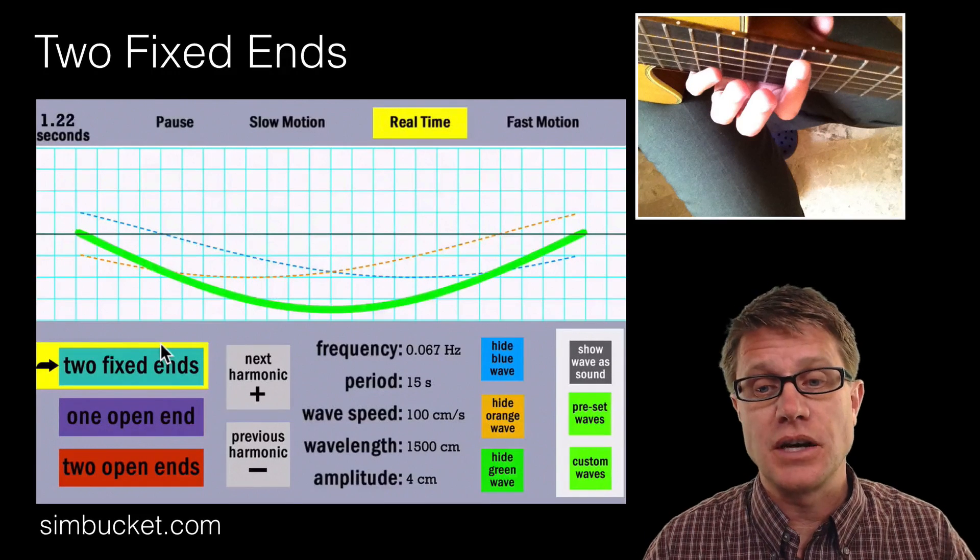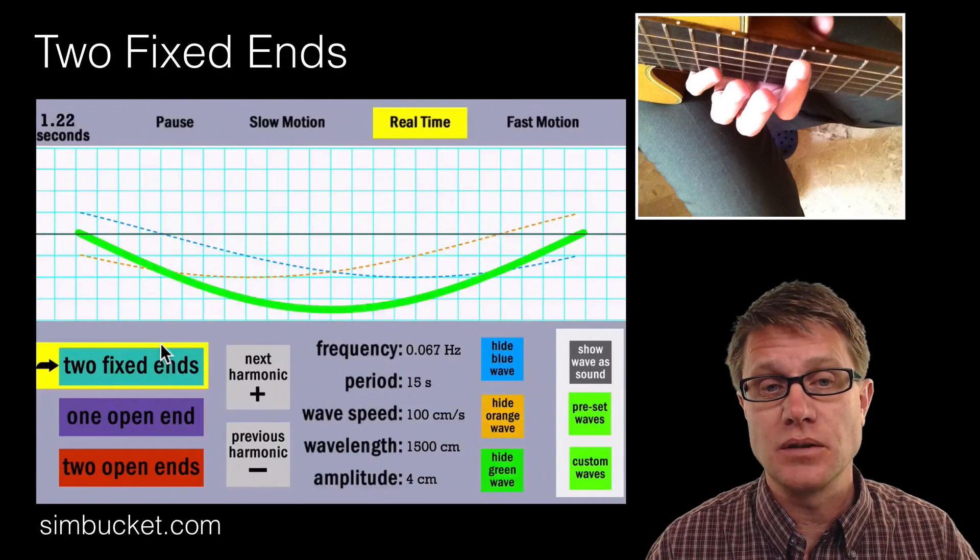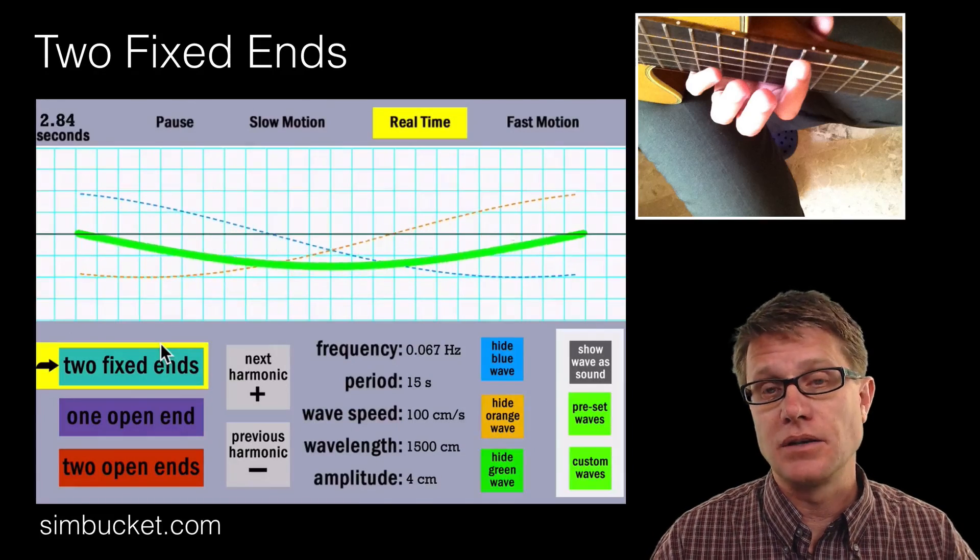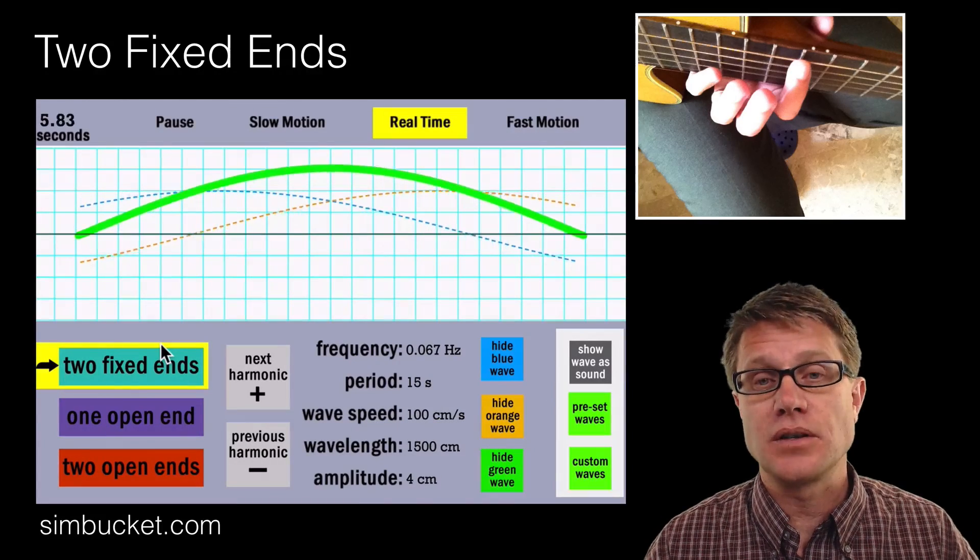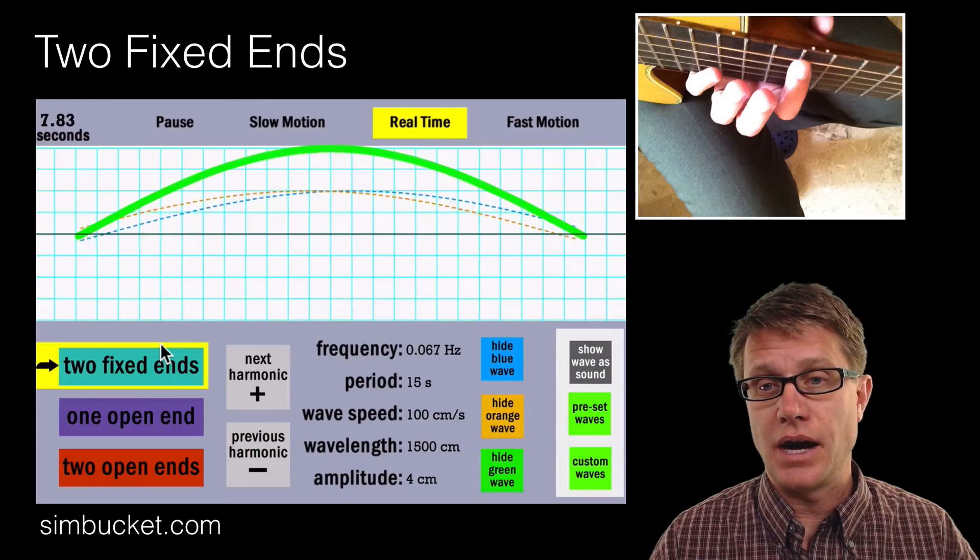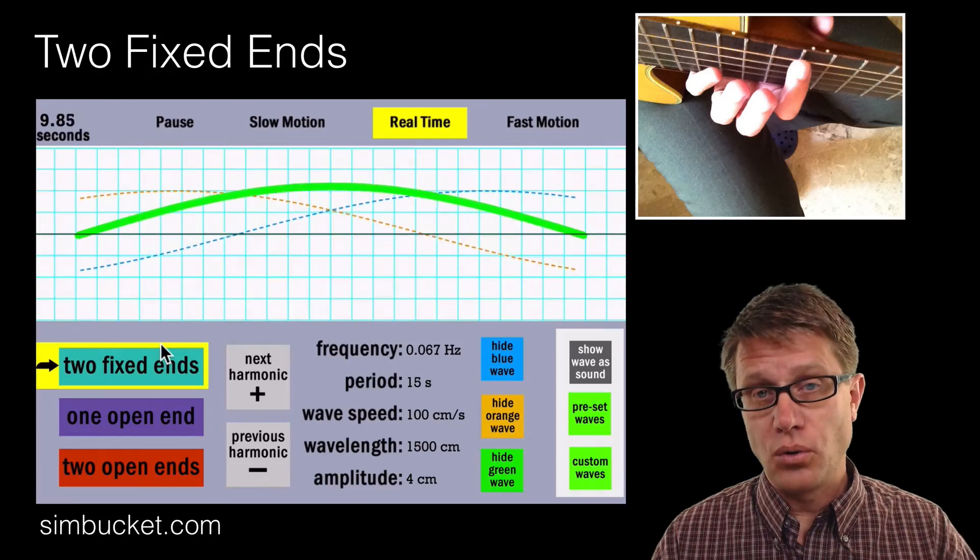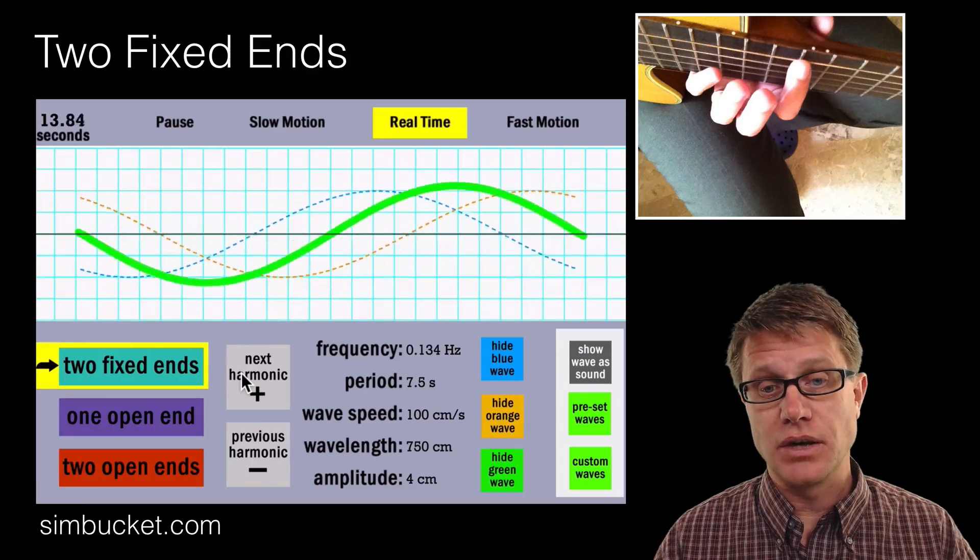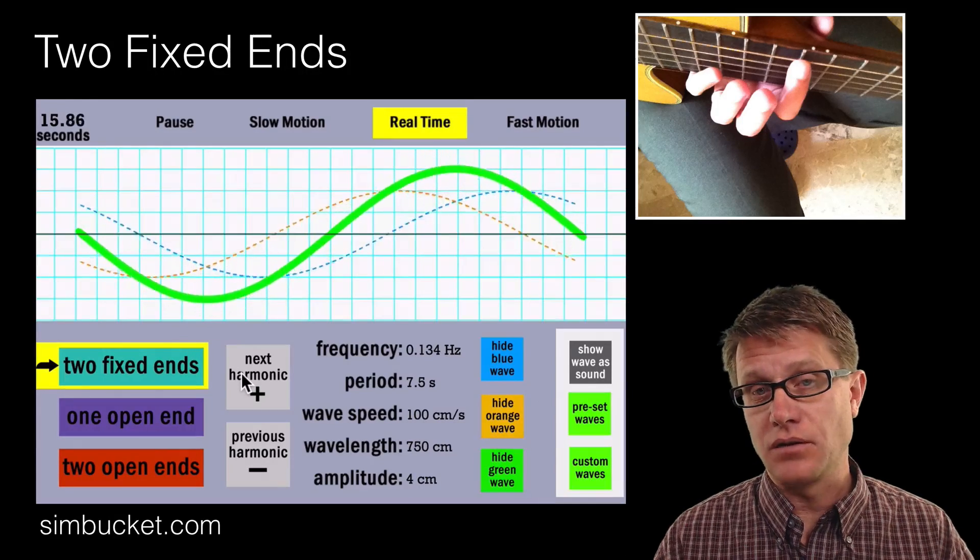And so let us go through experimentation. So this is a simbucket simulation. What we are doing is looking at standing waves. The first one we are going to look at is when you have two fixed ends. So an example of this could be a guitar. And so what you do is you have a string. You hold it on one side and then you pluck it and you are going to have vibration. So what do you get? Waves going back and forth and back and forth.